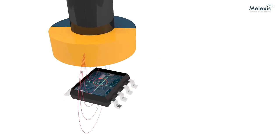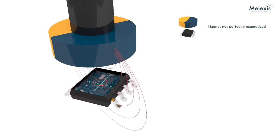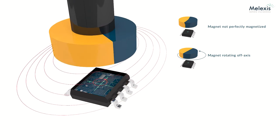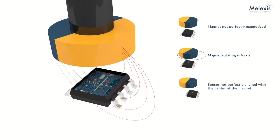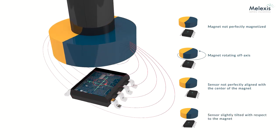However, the output obtained can be influenced by many factors, such as the magnet not being perfectly magnetized, the magnet rotating off-axis, the sensor not being perfectly aligned with the magnet, or the sensor being tilted with respect to the magnet. The resulting non-linearity is the combination of all these factors.